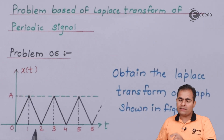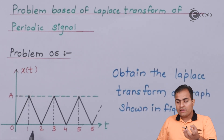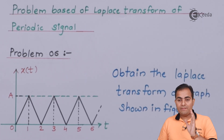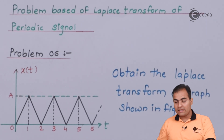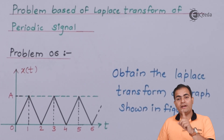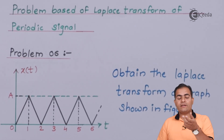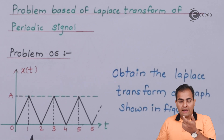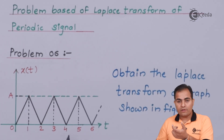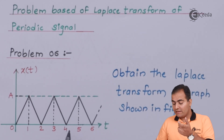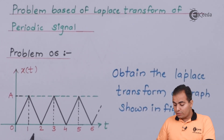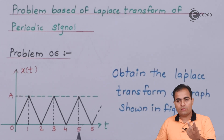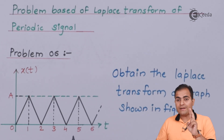If we find the Laplace transform of the first period, that is enough. Between 0 to 1 we have an increasing slope, and between 1 to 2 we have a decreasing slope. The time interval between 0 to 2 is 2, between 2 to 4 is also 2, and between 4 to 6 is again 2, which means the total time period is 2.